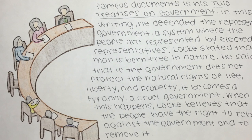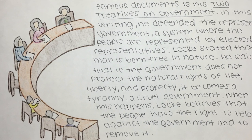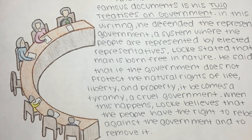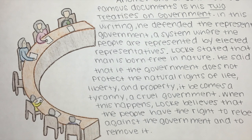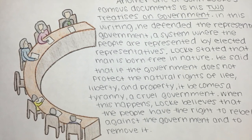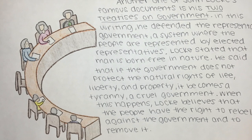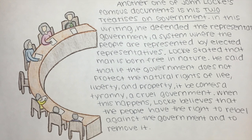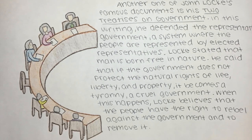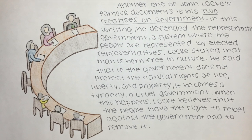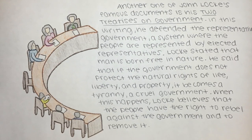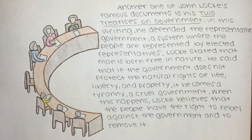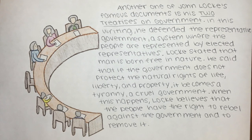Another one of John Locke's famous documents is his Two Treatises on Government. In this writing, he defended the representative government, a system where the people are represented by elected representatives. Locke stated that man is born free in nature. He said that if the government does not protect the natural rights of life, liberty, and property, it becomes a tyranny, a cruel government. When this happened, Locke believed that the people have the right to rebel against the government and to remove it.